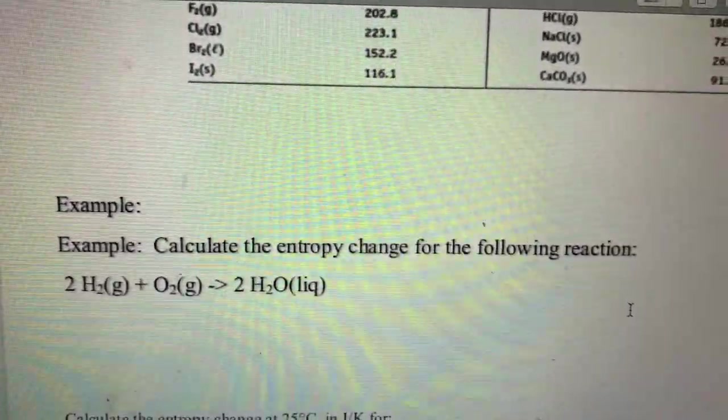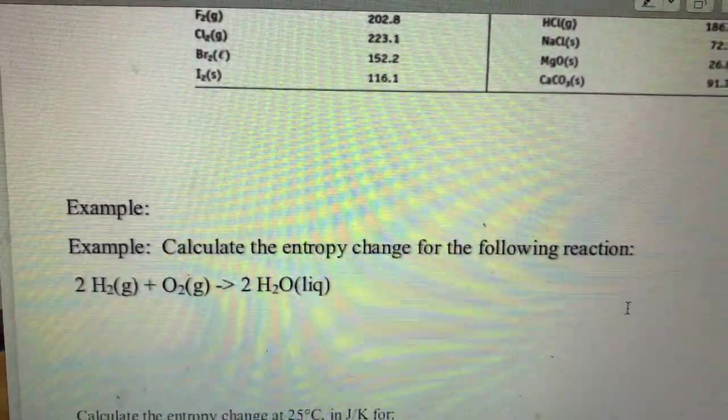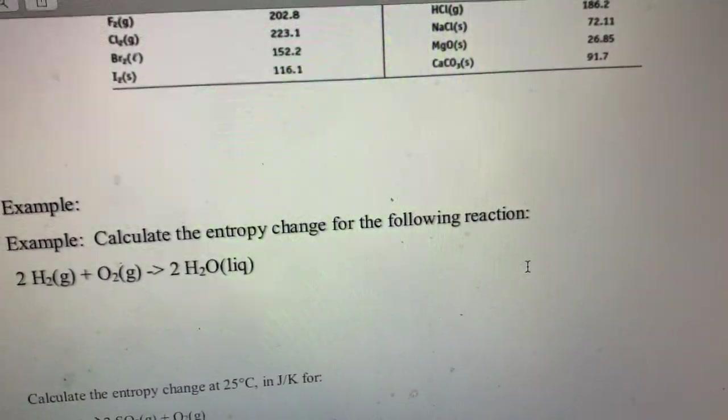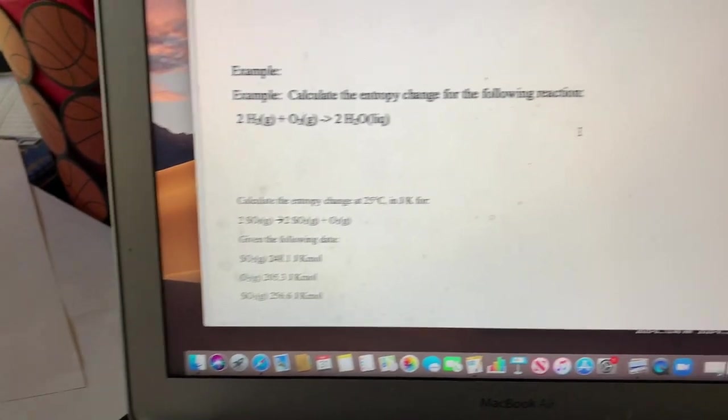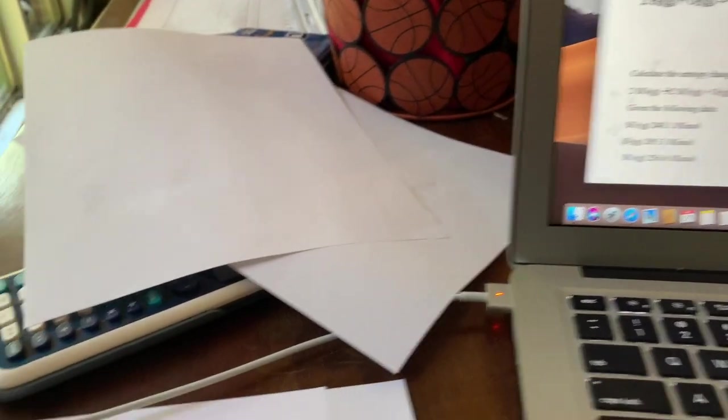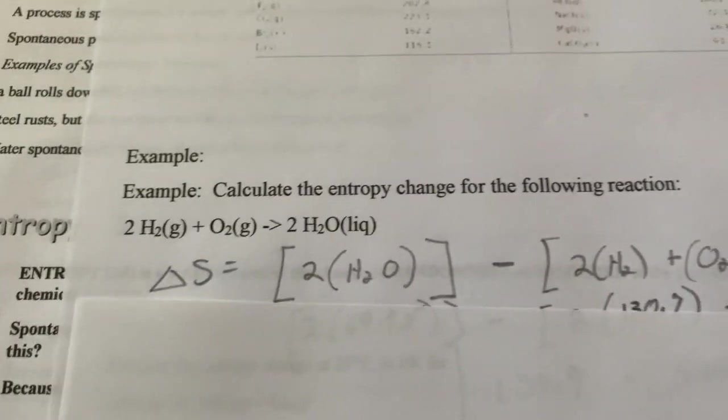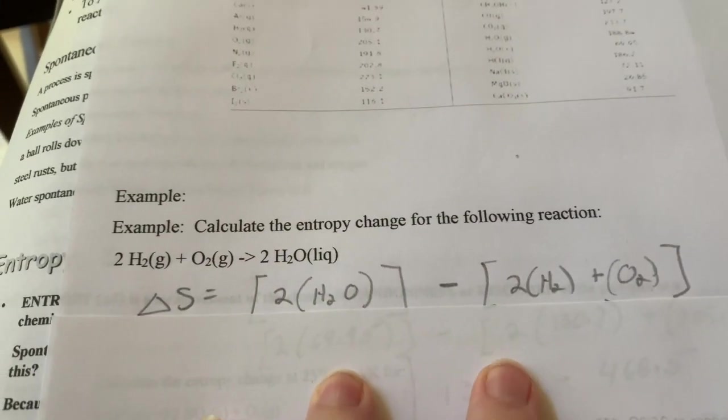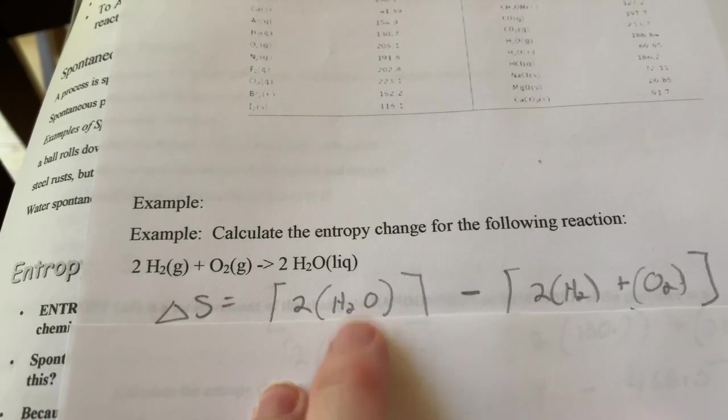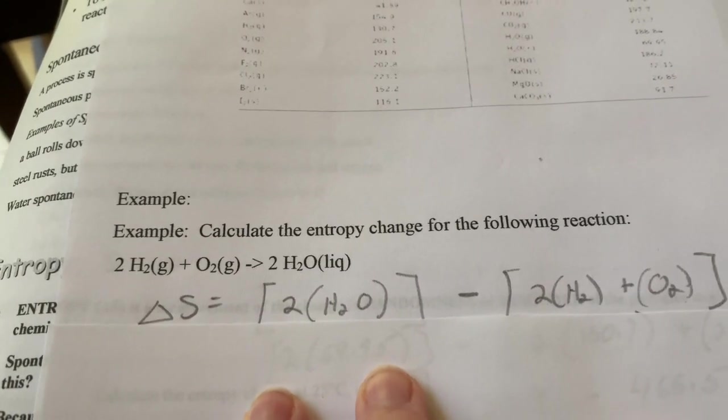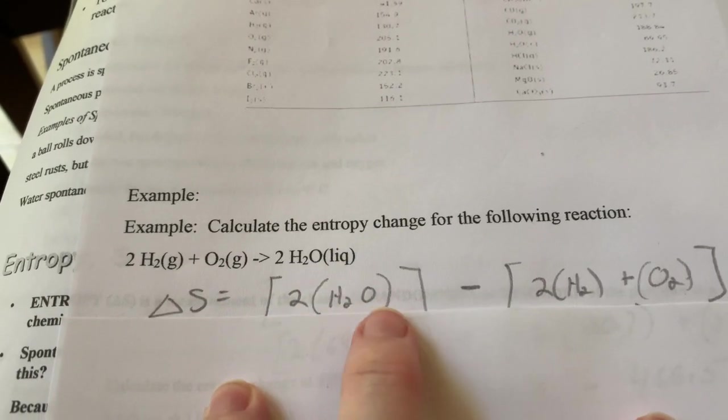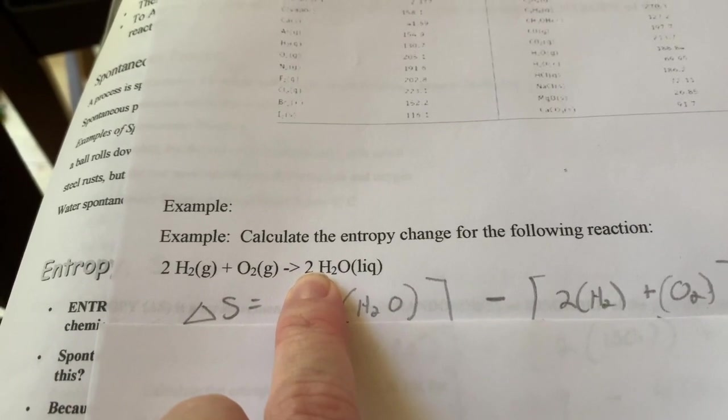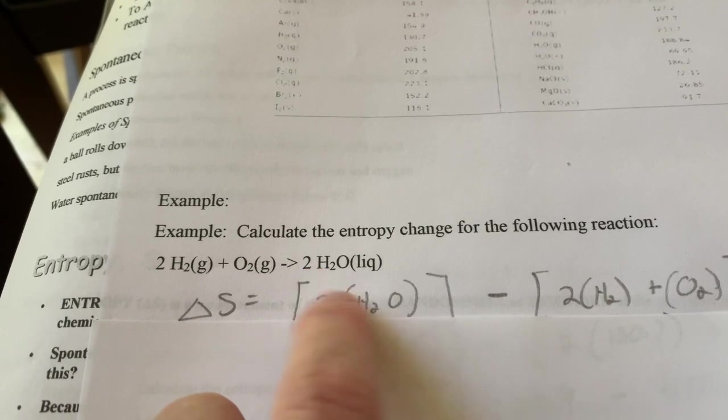Calculate the entropy change for the following reaction. Let's take a look at my paper here. So what have I done? I wanted to show you, remember I want the total of my products which is my water. Why do I have a two times the water? Because there is a coefficient of two. That's what the n stood for in that equation.